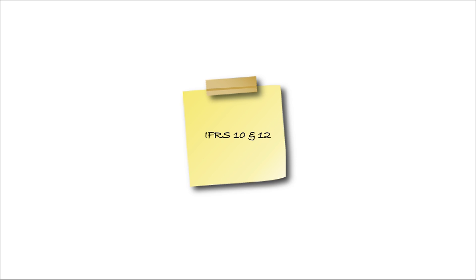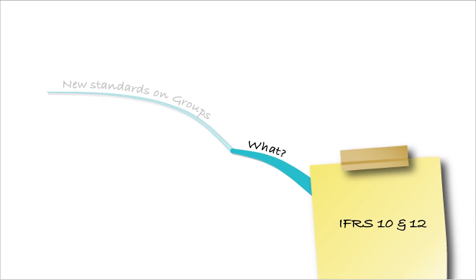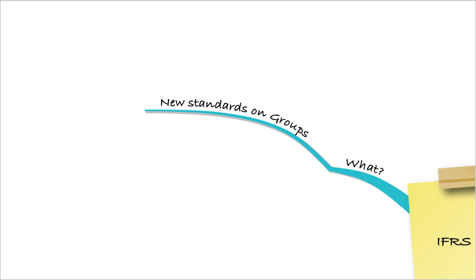Hello everyone, welcome back to the next of our full course lectures. We're going to look here at IFRS 10 and IFRS 12 — new standards. We're going to spend most of the time looking at IFRS 10. What have these new standards come in for? They're new standards on groups. What they do is they replace the bit of IAS 27 that defines control and sets out the disclosures required. It doesn't change how we do the consolidation in terms of the workings. It's just related to how we define control.